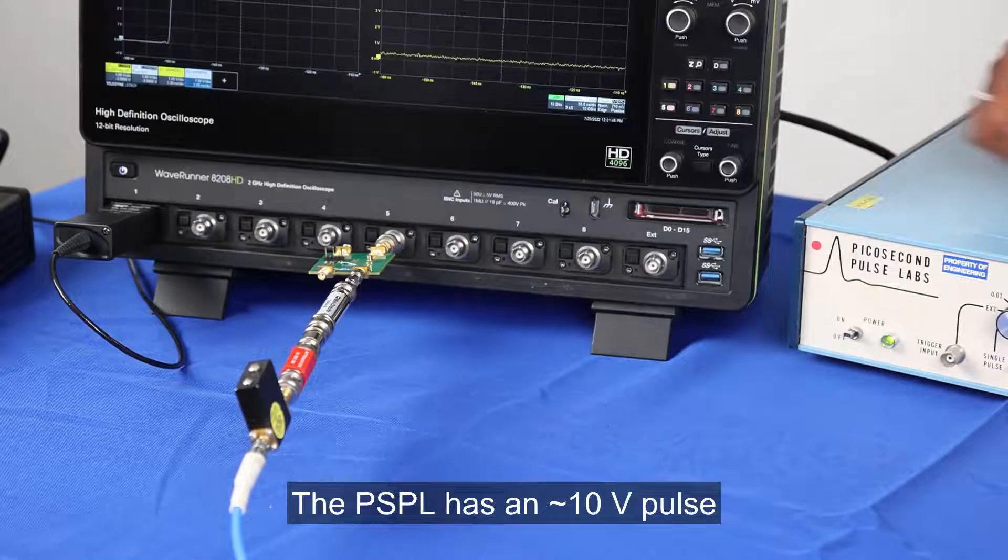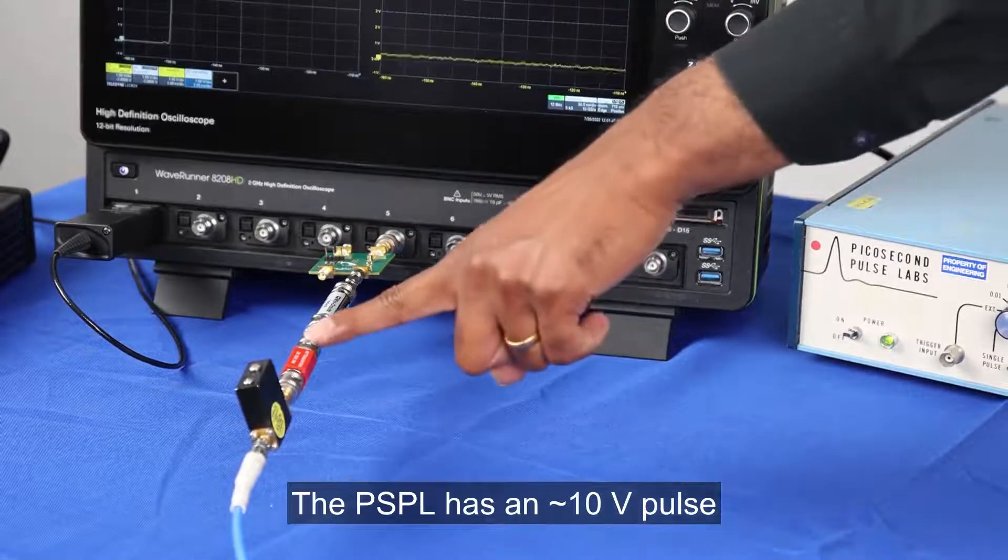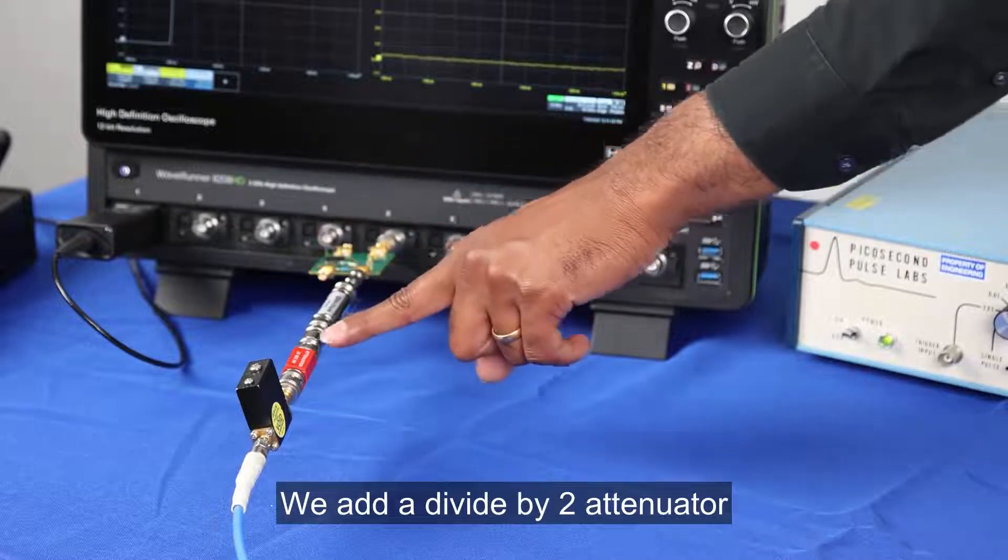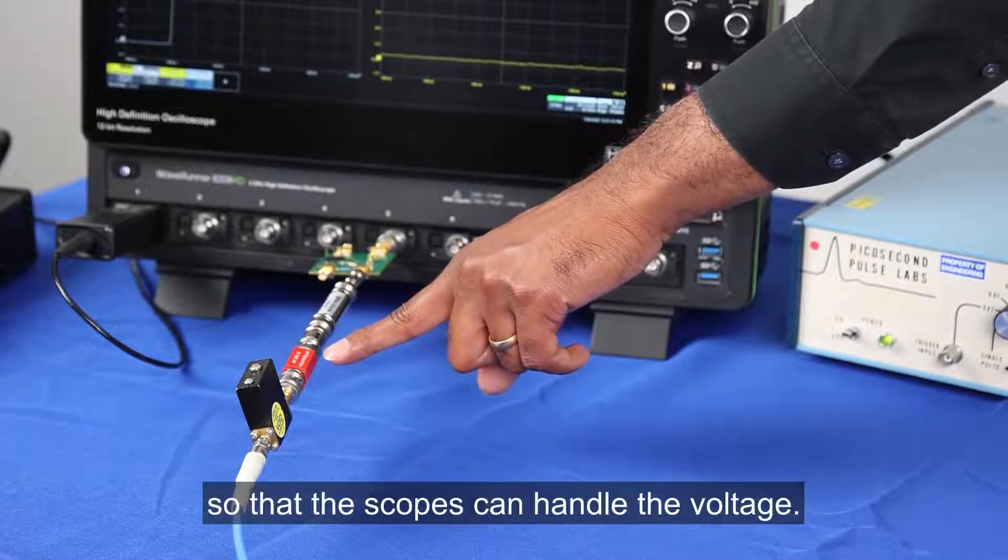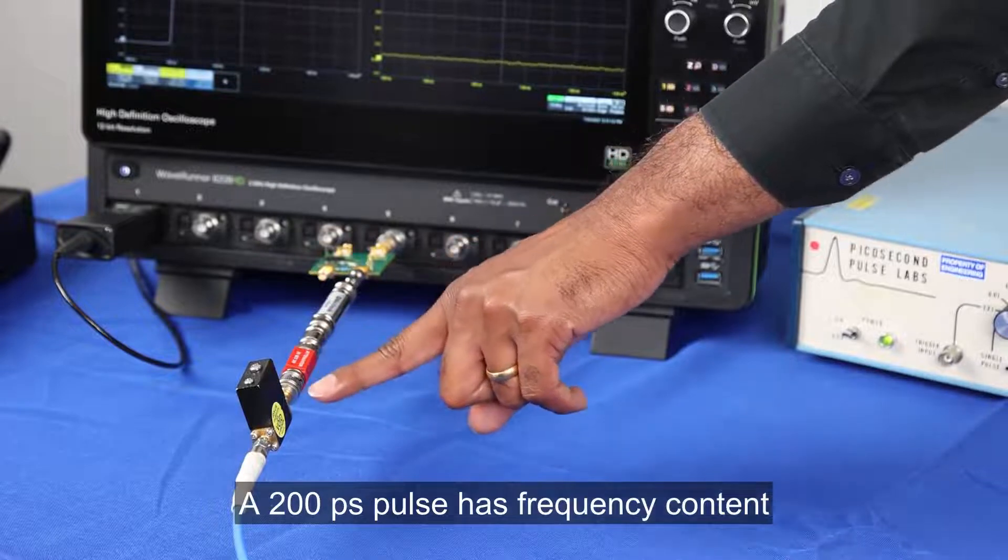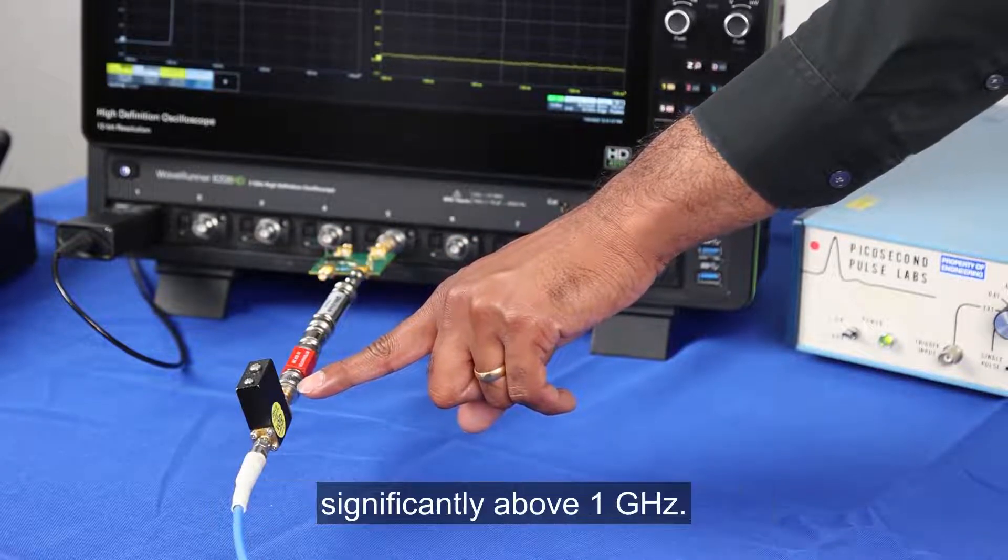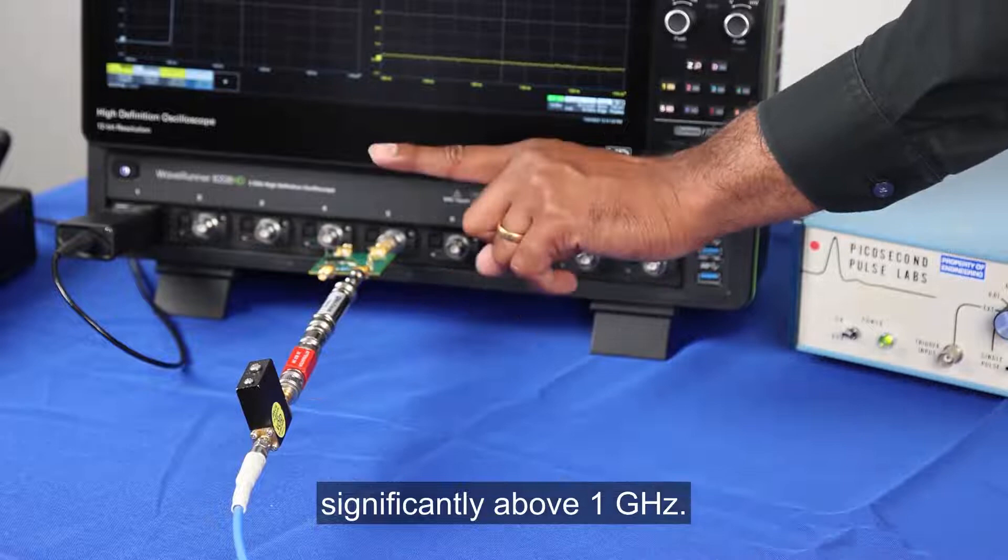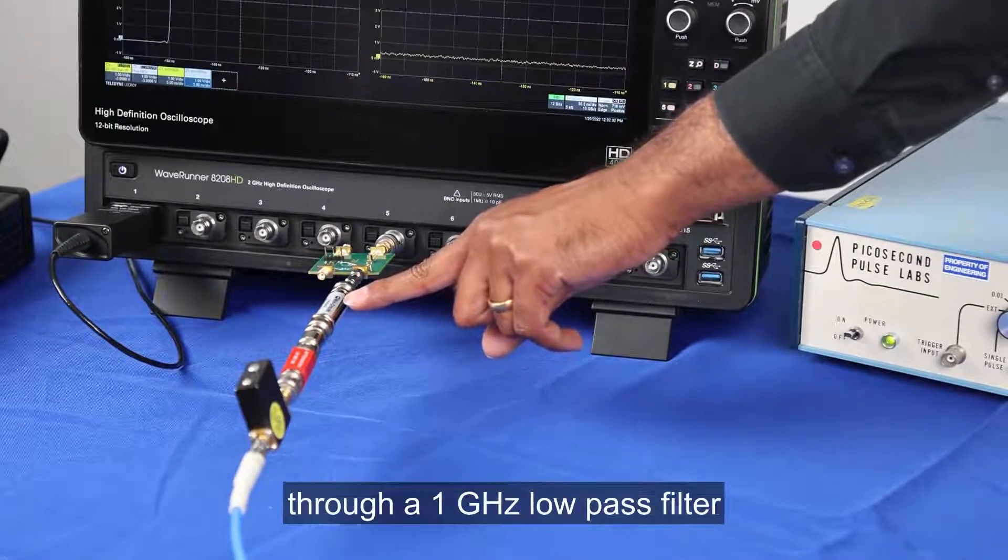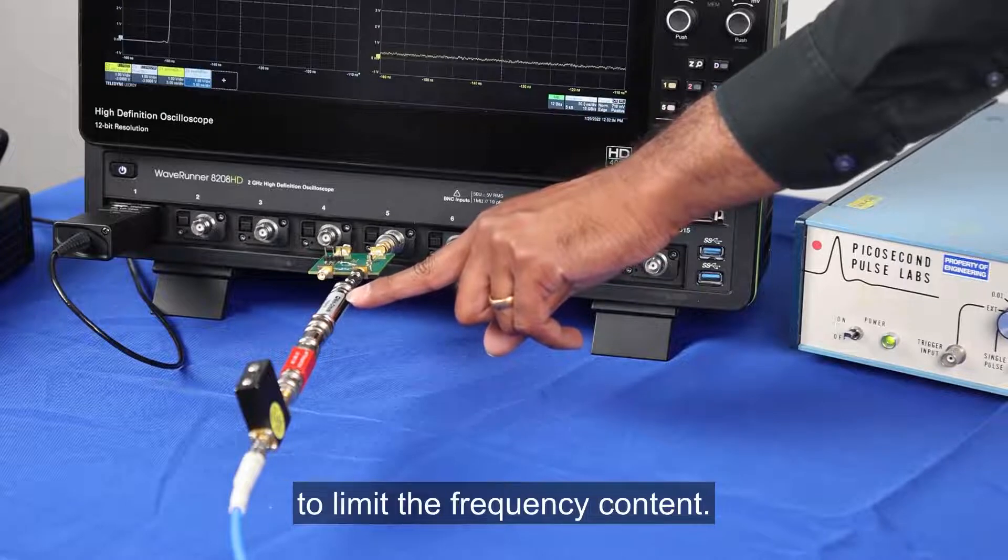The PSPL has an approximately 10 volt pulse at approximately 200 picoseconds. We add a divide by 2 attenuator so that the scopes can handle the voltage. A 200 picosecond pulse has frequency content significantly above 1 gigahertz, so I pass the PSPL output through a 1 gigahertz low pass filter to limit the frequency content.